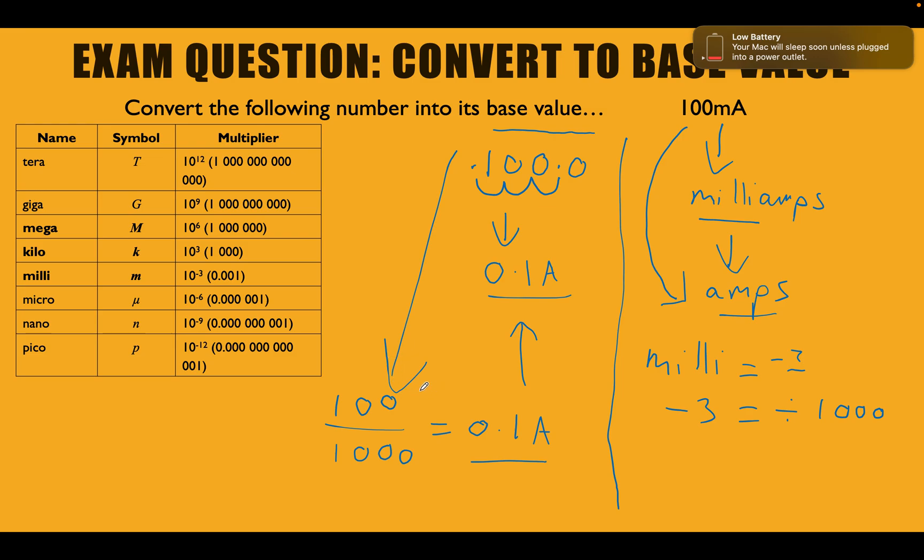The second way that we did this was by dividing our unit that we've got, 100 milliamps by 1,000. Now, why did we do it by 1,000? Because we know that milli is equal to minus 3 because of the chart that I've told you guys to memorize. And then minus 3 is equal to dividing by 1,000. So we did what we're given in the question, 100 milliamps divided by 1,000 equals 0.1 amps.